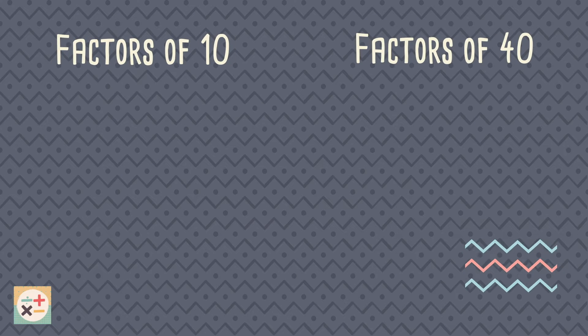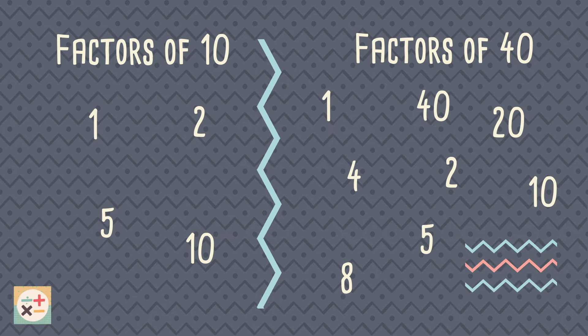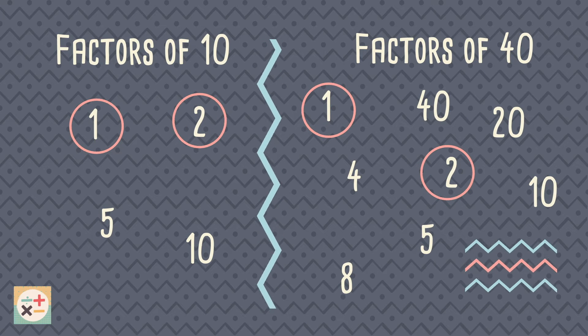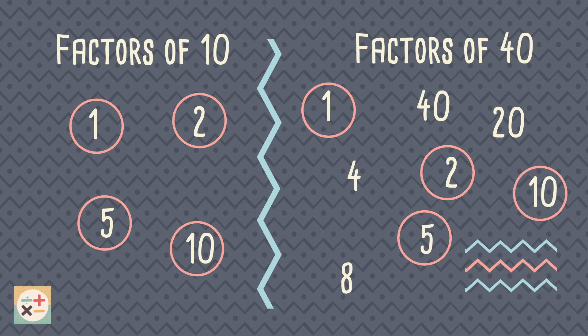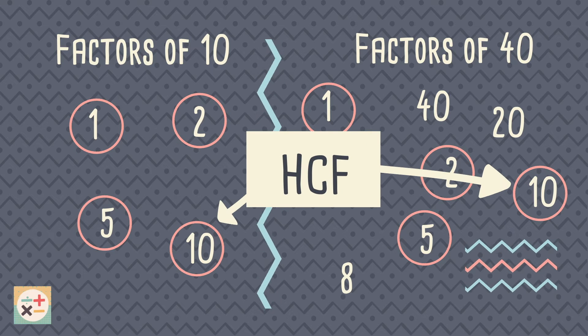So what is a common factor? A common factor is a number that is a factor of two or more numbers. For example, the common factors of these two numbers are circled. The greatest number out of these common factors is the highest common factor.